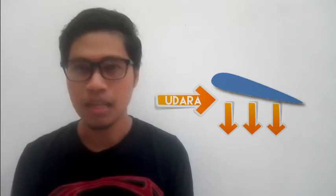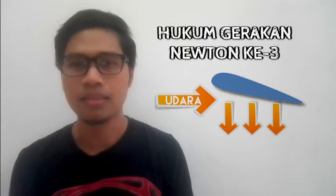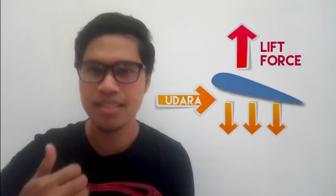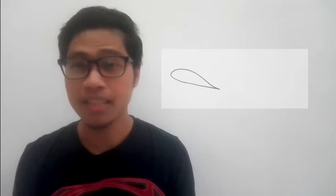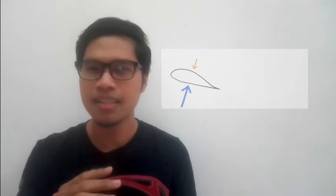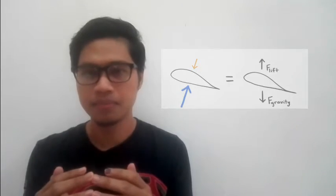Dan perkara ini tidak terhenti di situ saja. Untuk menghasilkan lift force yang cukup kuat untuk mengimbangi berat kapal terbang, ada satu lagi pelarasan yang perlu dilakukan pada sayap kapal terbang ini, iaitu pada sudut kecondongannya, ataupun yang dipanggil sebagai angle of attack. Apabila sayap kapal terbang ini dicondongkan, ia akan memaksa aliran udara itu bergerak ke bawah. Mengikut hukum gerakan Newton ketiga, aliran udara yang dipaksa untuk bergerak ke bawah akan menghasilkan satu daya yang mengangkat kapal terbang itu ke atas. Secara ringkasnya, beginilah lebih kurang bagaimana sayap kapal terbang ini dapat menghasilkan daya untuk mengimbangi graviti, dan menyebabkan kapal terbang itu dapat kekal terbang di atas udara.